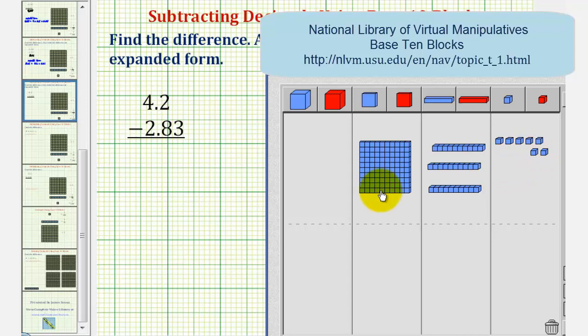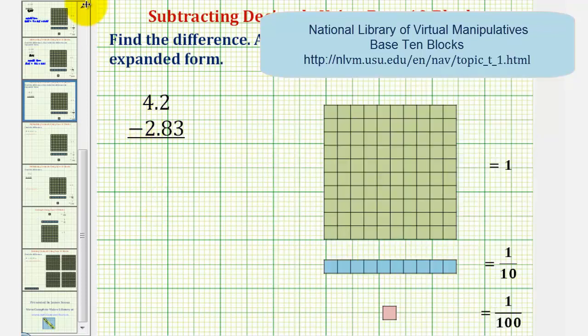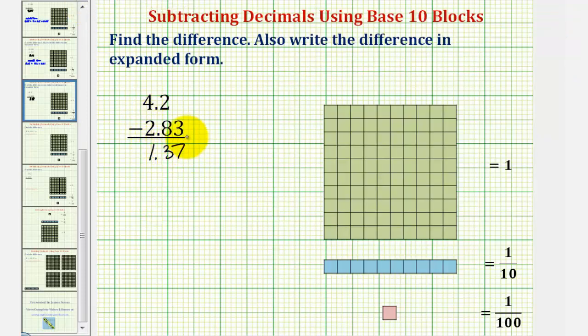Which would be one plus three tenths plus seven hundredths, or 1.37. So our difference is 1.37.